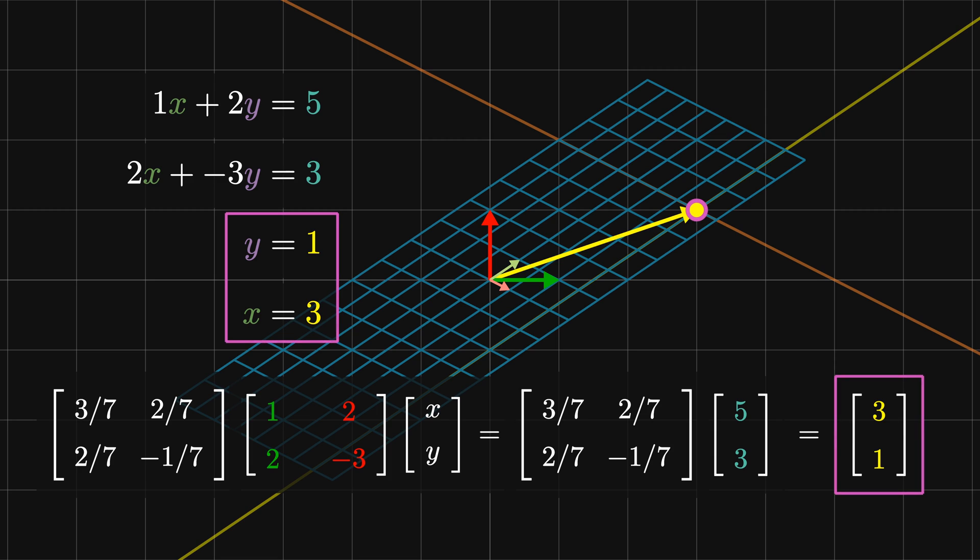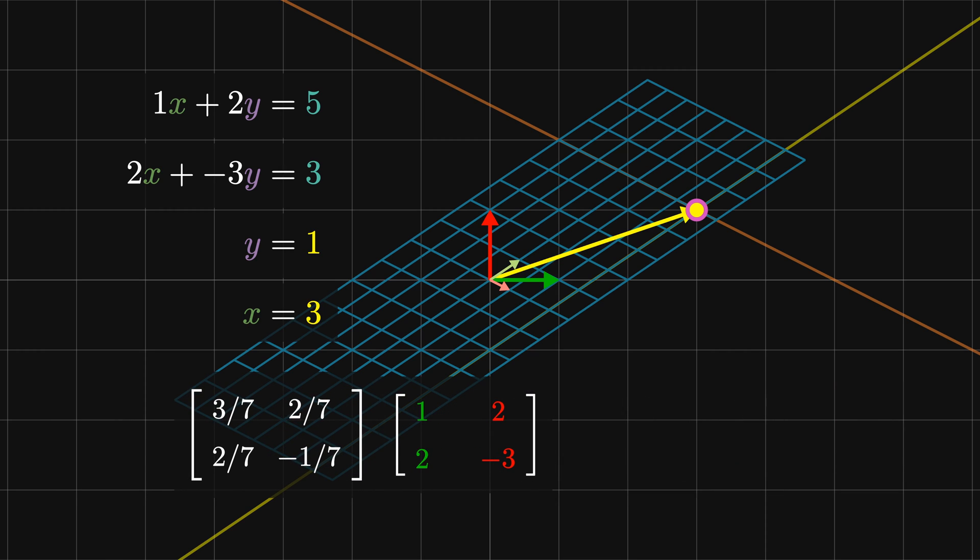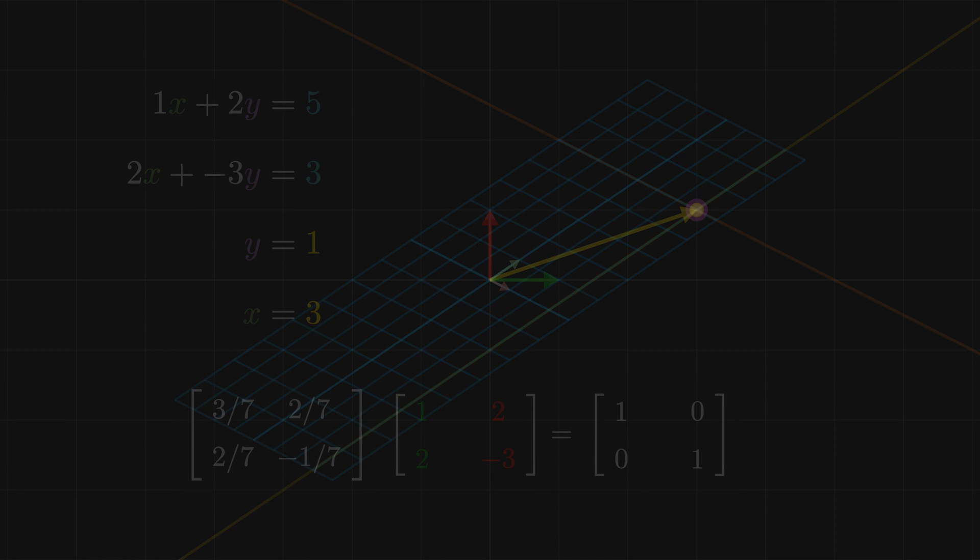What we've actually done by converting our algebra steps into matrix transformations is solve for the inverse of the original coefficient matrix [1, 2; 2, -3]. This transforms the coefficient matrix into the identity matrix. Now let's have a more systematic look at how we constructed the inverse matrix.